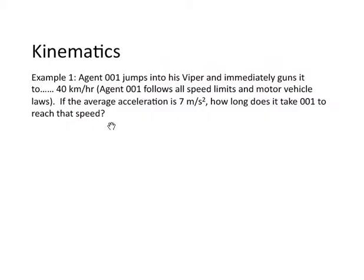Let's look at our first example. Agent 001 jumps into his Viper and immediately guns it to 40 kilometers an hour. Agent 001 follows all speed limits and motor vehicle laws. If the average acceleration is 7 meters per second squared, which is 7 meters per second per second, how long does it take 001 to reach that speed? Let's see.